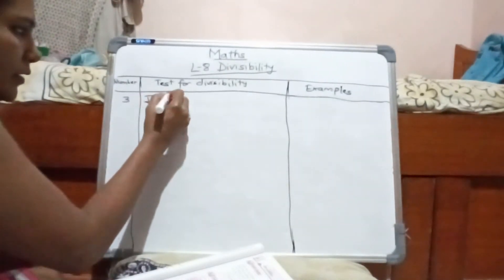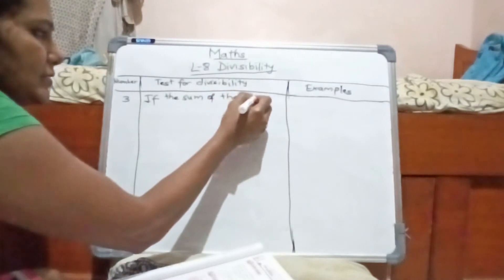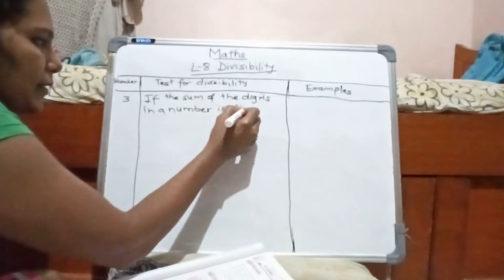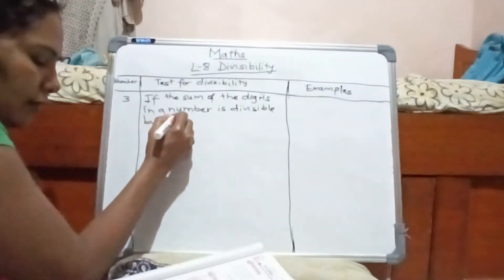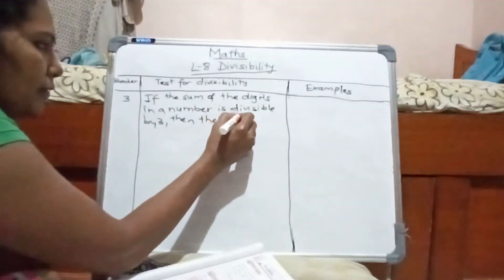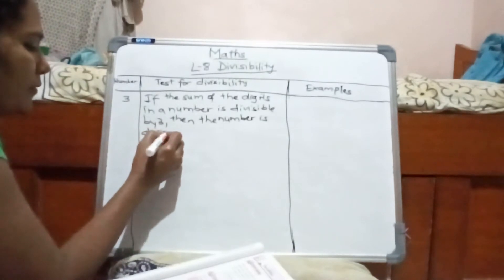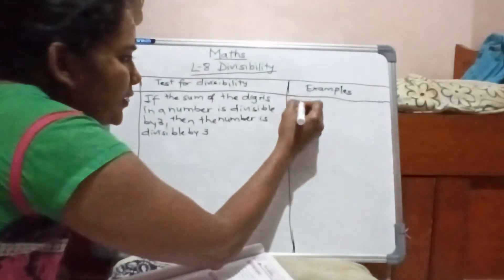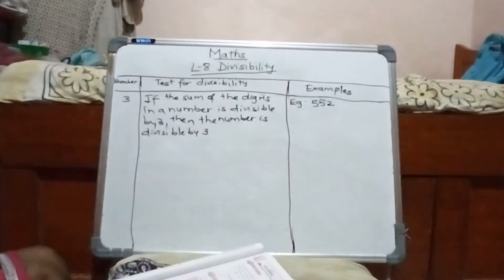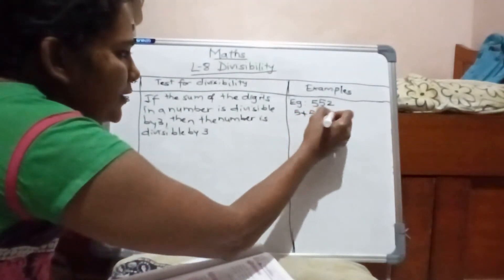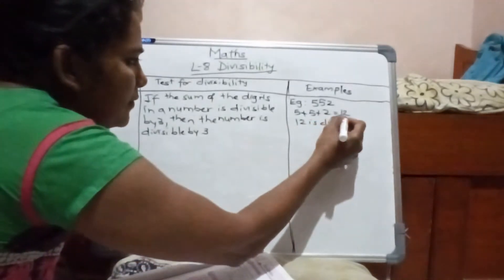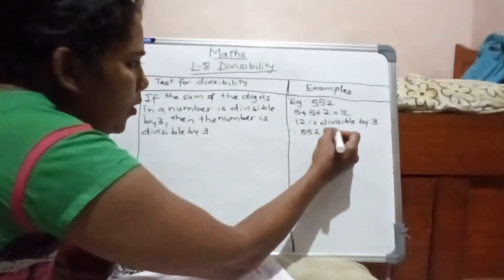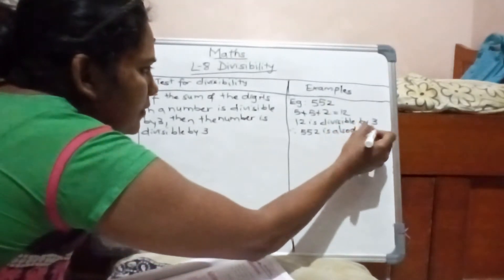If the sum of the digits in a number is divisible by 3, then the number is divisible by 3. Example: take 552. Now 5 plus 5 plus 2 gives us 12. 12 is divisible by 3, therefore the number 552 is also divisible by 3.